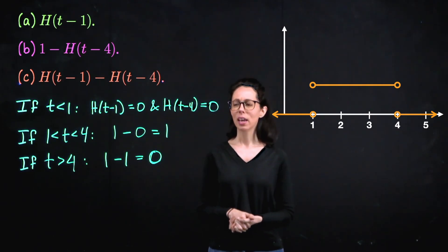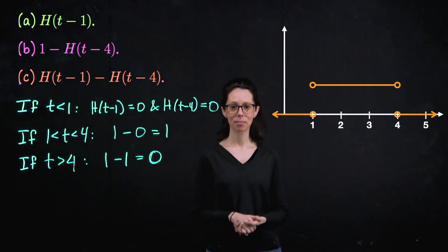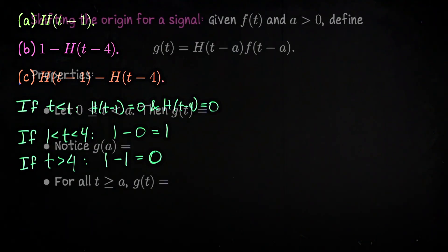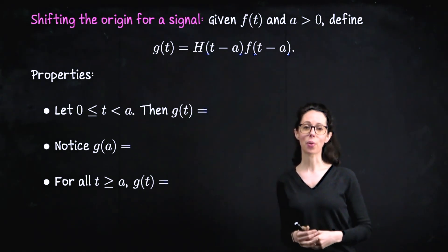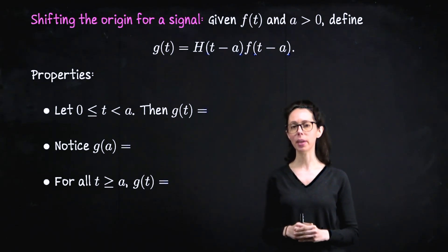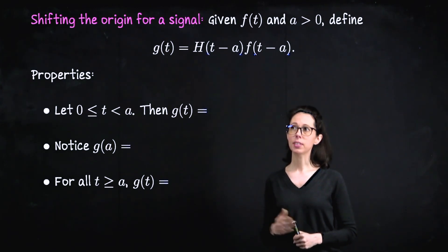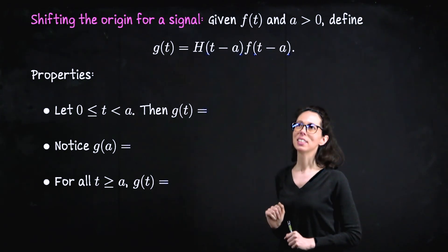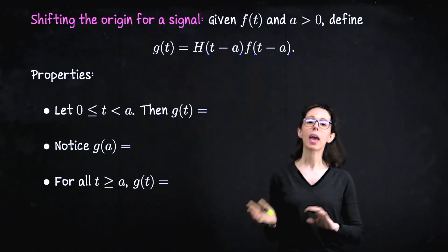Now let's start talking about Laplace transforms. Imagine you have some physical model like a harmonic oscillator and you would like to apply an external signal to it, but you don't want that signal to appear until a seconds have gone by, where a is greater than zero. How we set this up is with a product: we define g of t to be h of t minus a times f of t minus a. So we're shifting both the Heaviside function and the original signal f by a units to the right.